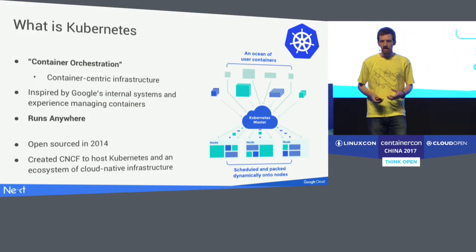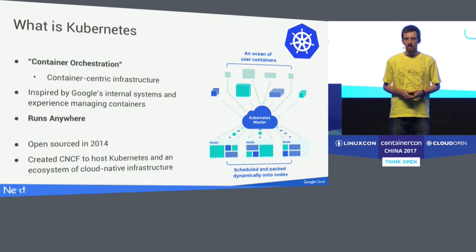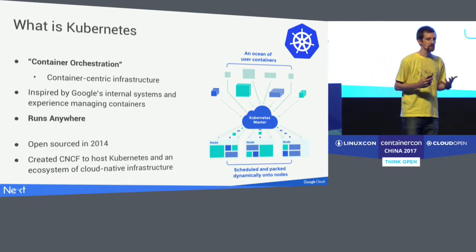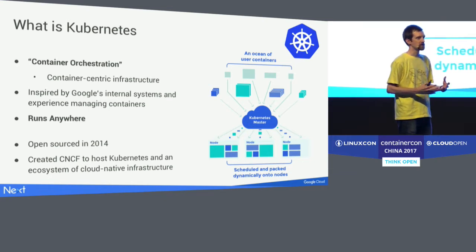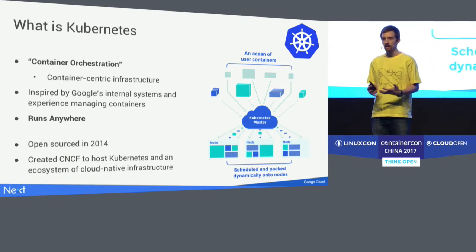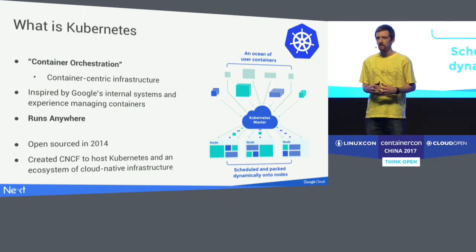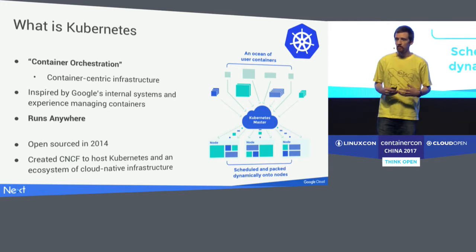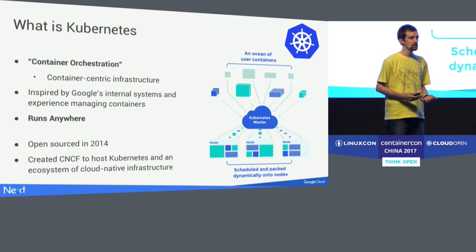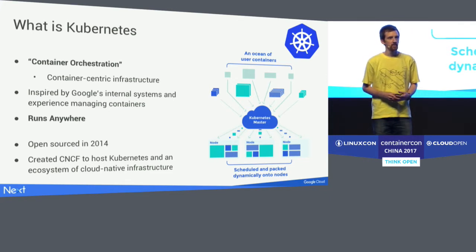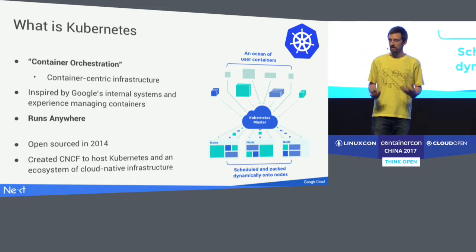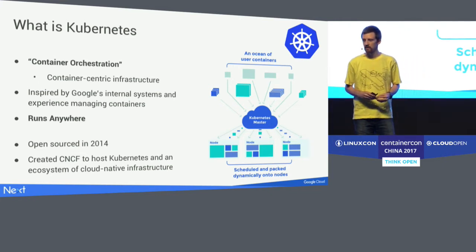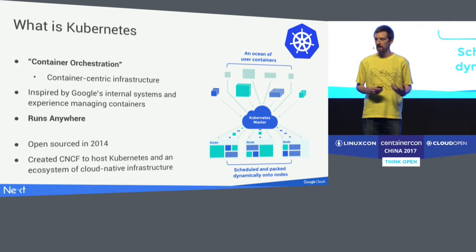Kubernetes is a container orchestration system — essentially what we'd like to call a container-centric infrastructure. Not just deploying any type of application, this is focused directly on containers and is container-native from the very beginning. It's inspired by Google's own experience deploying systems using container technology. Google has been deploying containers for about 10 years, with all applications — from Search to Gmail — deployed using containers. We want to bring that experience out into the open source community.